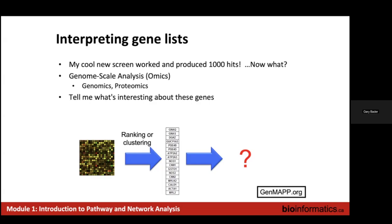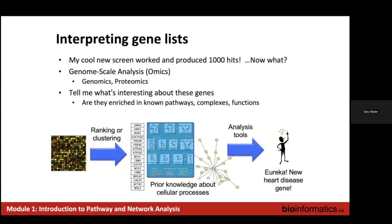In general, the idea of pathway and network analysis is to help us automate that analysis. Most of the time when we get these big lists of genes, the first question is: what is this telling me about the experiment or the system that I'm studying? What's interesting about these genes? A very common way of answering this question is to find out if they're enriched in known functions of genes — and these functions are frequently things like biological pathways.